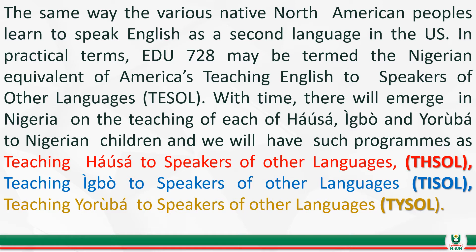This course, EDU 728, is prepared to teach the three major Nigerian languages. It is the belief of this course that with gradual intensity and efforts, there will emerge in Nigeria the teaching of Hausa language tagged something like 'Teaching Hausa to Speakers of Other Languages' (TESSO), teaching of Igbo language as 'Teaching Igbo to Speakers of Other Languages,' and 'Teaching Yoruba to Speakers of Other Languages.'